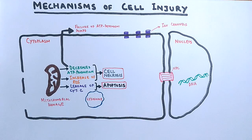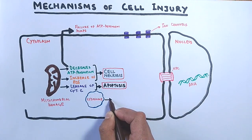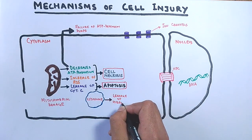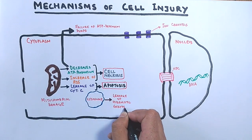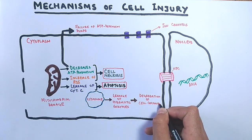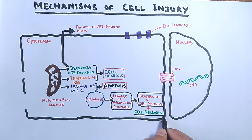This mitochondrial permeability transition process leads to necrosis or apoptosis depending on the type and potential of the injury. Regarding the lysosome: when there is any kind of lysosome damage, there will be leakage of hydrolytic enzymes, which degrade cellular components and eventually lead to necrosis.